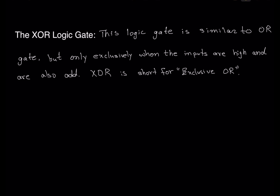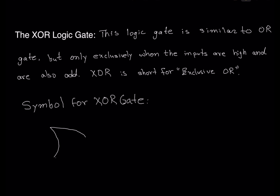Let's talk about the symbol for the XOR gate. The symbol is similar to the OR gate — let's draw an OR gate. There are inputs coming in. That is the OR gate, but if we add a curved line here, that makes it exclusive and it becomes the XOR gate.